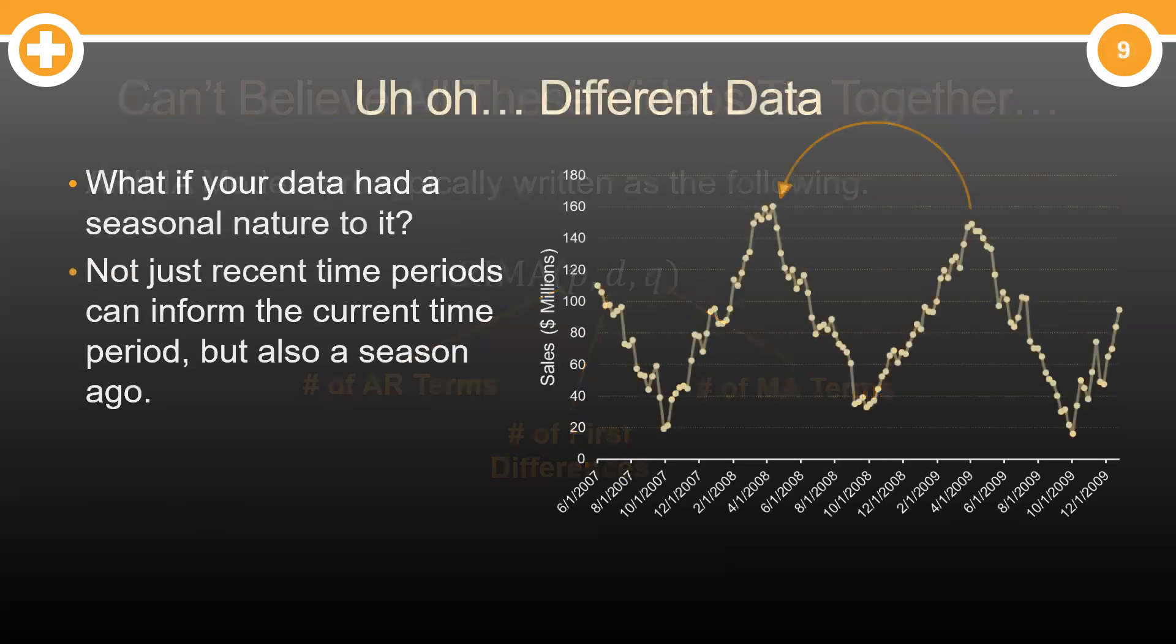But what if your data actually had a notion of seasonality to it? Energy fluctuates depending on hour of day. Sales fluctuate depending on time of year, etc. This effect can still be an AR lag effect or an MA error lag effect, but be careful.